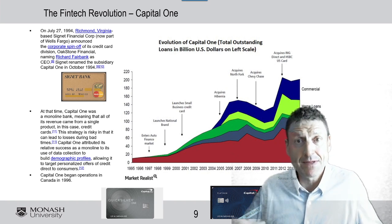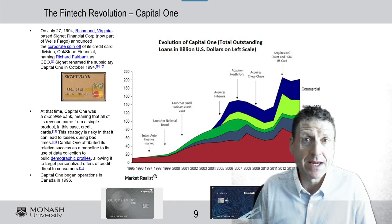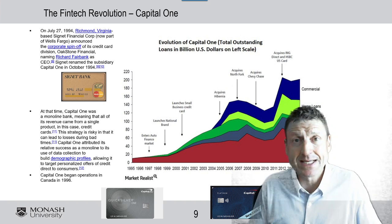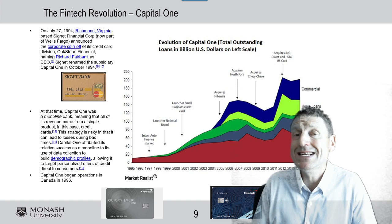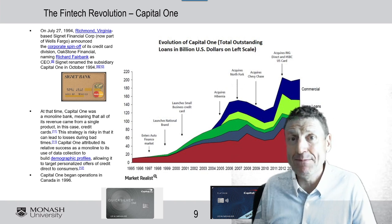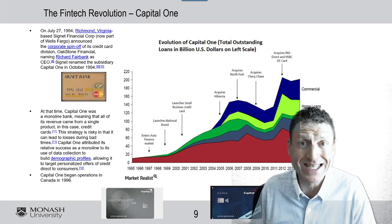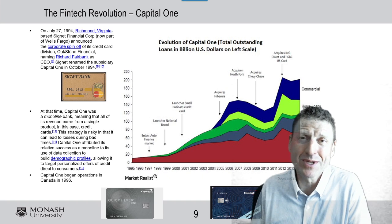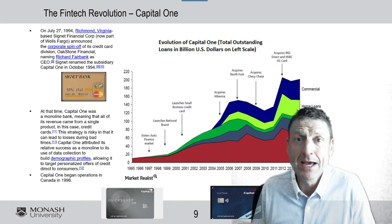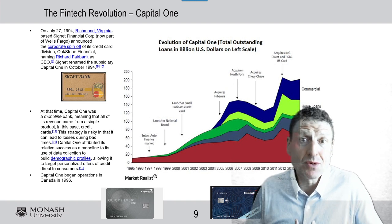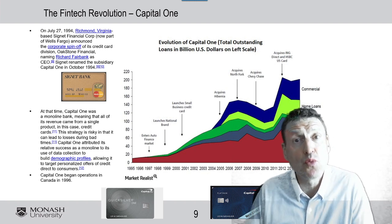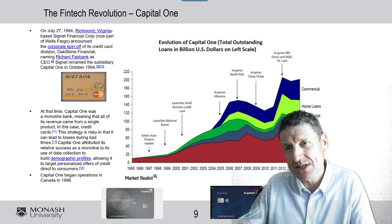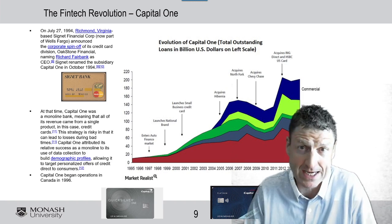Look what happened to Capital One. Now they're basically the largest credit card issuer in the world, because what they have been doing is giving loans to a broader demographic, which enables them to do more research and development on what are the signals or sources of information that give the best ability to make a decision whether you will repay a loan or not. This is what's happening — this is the new revolution, and this is even before fintechs came along.